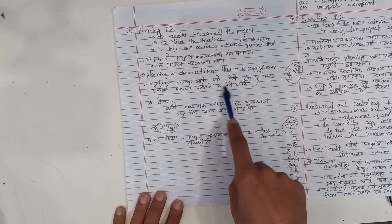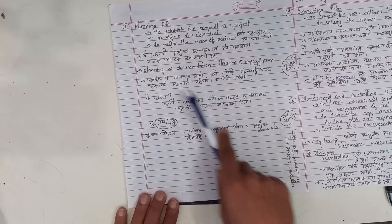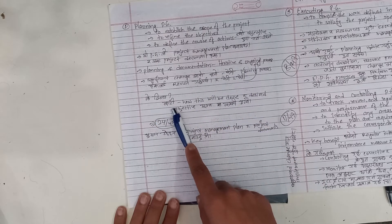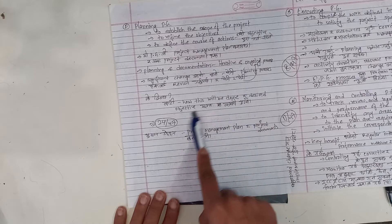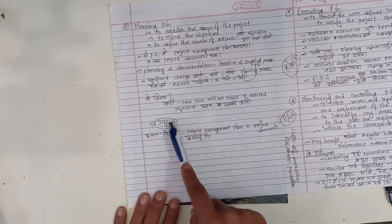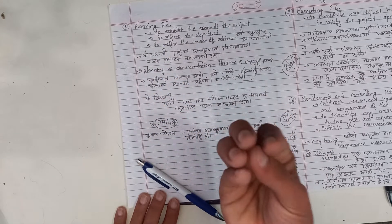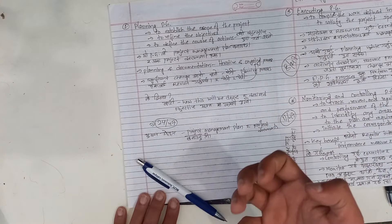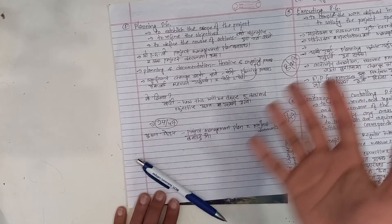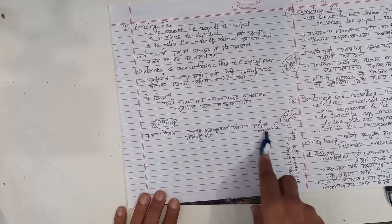When a significant change occurs, we need to revisit the planning process — that is the iterative and ongoing process. How will this be done? The desired objective is to complete the planning process. The key output is the project management plan and project documents.